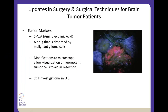Another fascinating area is tumor markers — in particular, 5-ALA, or 5-aminolevulinic acid. This drug can be absorbed by malignant glioma cells. With modifications to the microscope, it allows direct visualization of tumor cells which fluoresce. This is still investigational in the U.S., though a number of centers are using it. There seems to be promise particularly with glioma cells, but like all these tools, none are perfect and they're often used in conjunction with others.